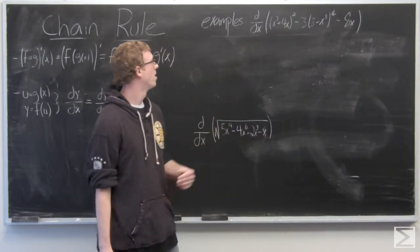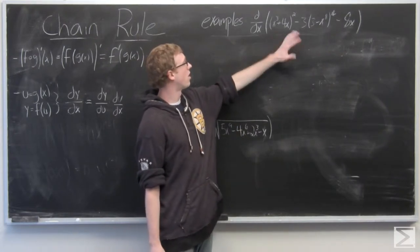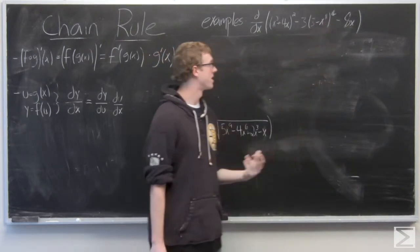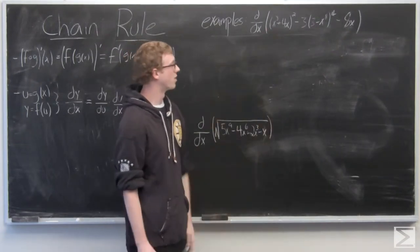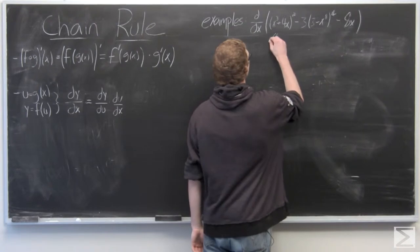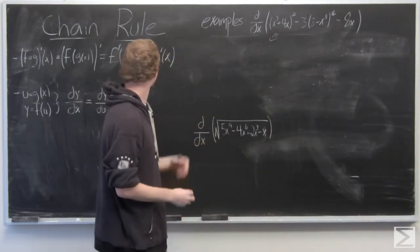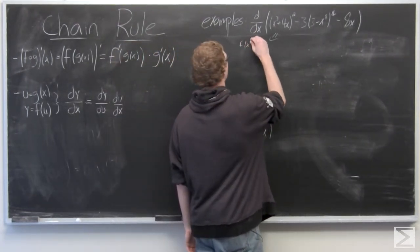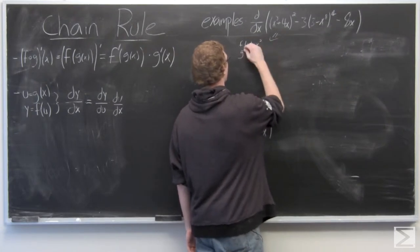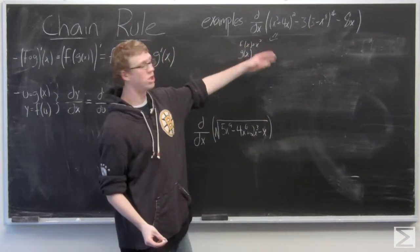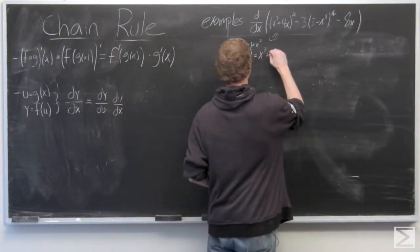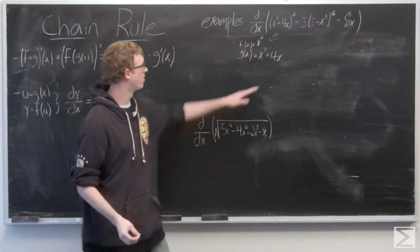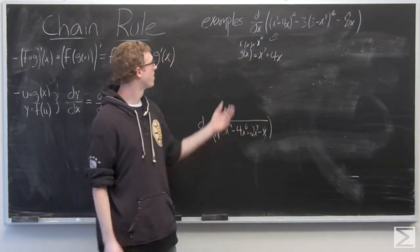So the first example we're going to take a look at: we want the derivative of x cubed plus 4x all squared, minus 3 times 3 minus x to the 8th to the 4th, minus 8x. Let's break this down and only look at the first piece. Let's say this is f of g of x where f of x is just x squared and g of x is x cubed plus 4x.